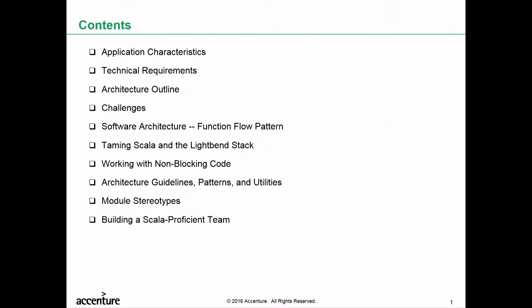We were fortunate to be working on a US federal program with forward-thinking stakeholders who understood the potential benefits of what we were proposing, and who supported us when we recommended building their next generation of mission-critical back-end services using Scala and the functional architecture approach. We'll start by talking about the characteristics of our application, outline the architecture approach we used, talk briefly about the challenges we encountered, and then spend the majority of the talk going over the approaches we used to address several of those challenges.